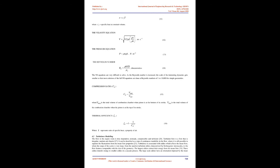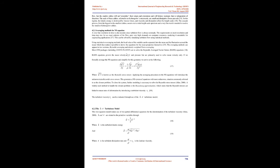Section 4.2: Turbulence Modeling. The flow in the engine is time-dependent, unsteady, compressible, and turbulent. Turbulent flow is a flow that is irregular, random, and chaotic. It can be described as a state of continuous instability in the flow, where it is still possible to separate the fluctuations from the mean flow properties. Turbulence is associated with eddies which affect the mean flow. The range of scales is very large, from the smallest turbulent eddies characterized by Kolmogorov microscales to the flow features comparable with the size of the geometry. The largest eddies extract their energy from the mean flow and transfer energy to smaller eddies in a cascade process.